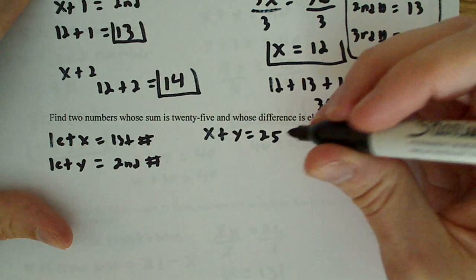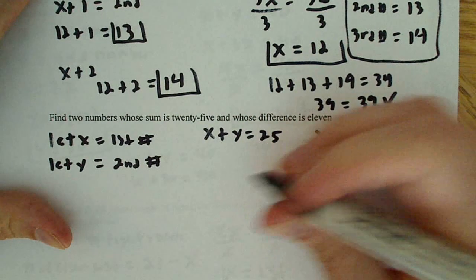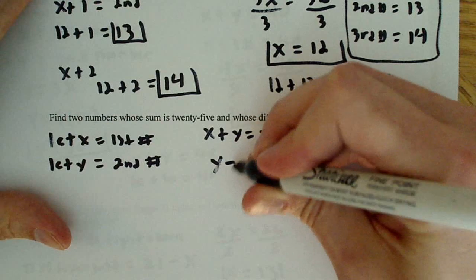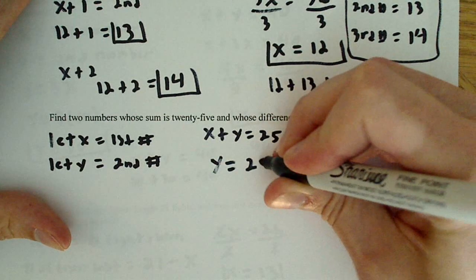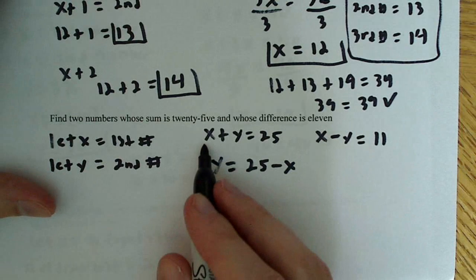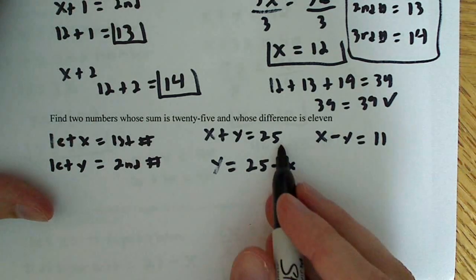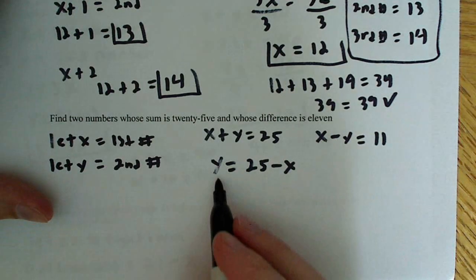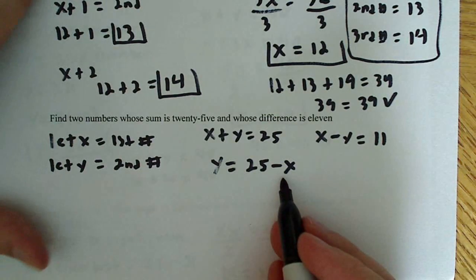So what I'm going to say here, I'm going to define y here. I'm going to say y is equal to 25 minus x, because I'm going to subtract one x from this side and subtract one x from this side. So that leaves me with this equation, y is equal to 25 minus x.